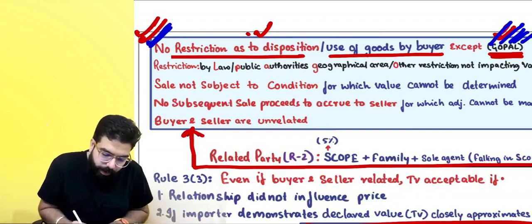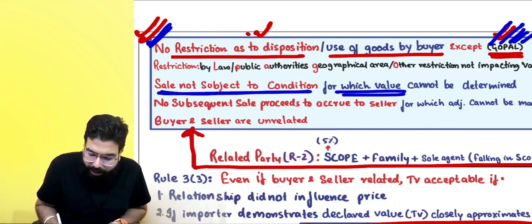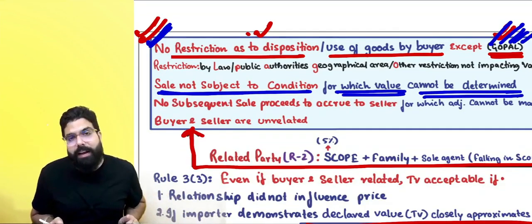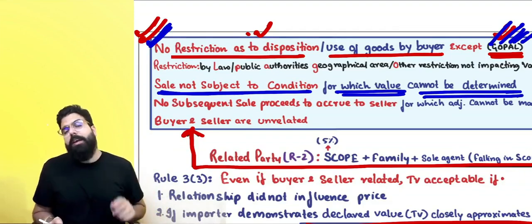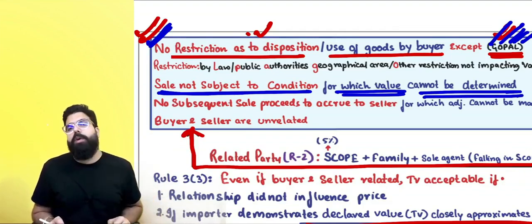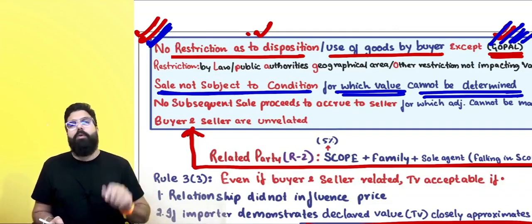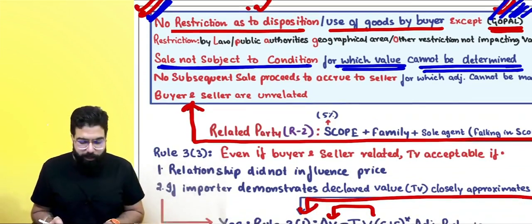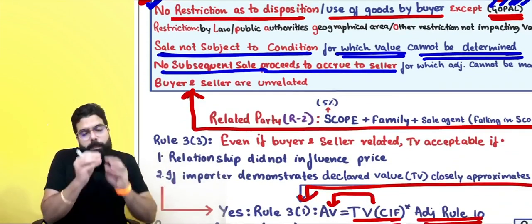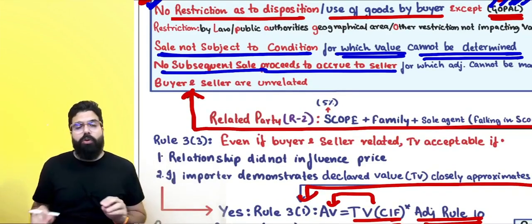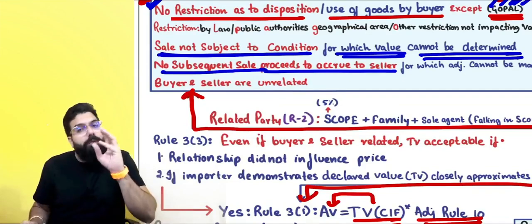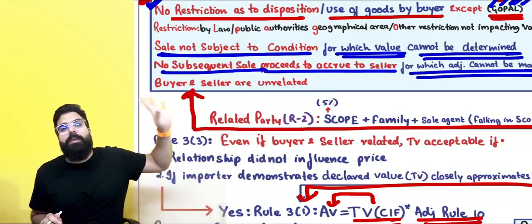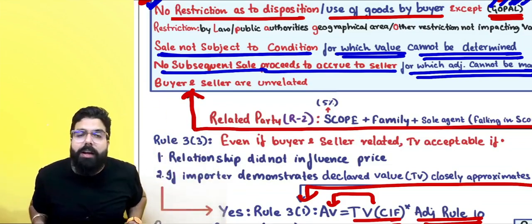The second condition under Rule 3(2): the sale should not be subject to a condition for which value cannot be determined — it must be an unconditional sale. If any condition is attached to the sale, the officer will not accept the declared value and will apply the valuation rules. The third condition: no subsequent sale proceeds should be payable to the seller for which you cannot make any adjustment. If you cannot determine the adjustment, find the value using valuation rules.